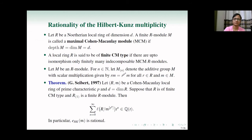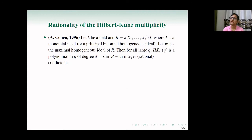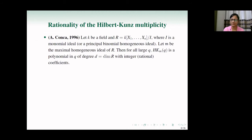Kunka proved in 1996: if R = k[x_1, ..., x_n] / I where I is either a monomial ideal or a principal binomial homogeneous ideal, and m is the maximal homogeneous ideal, then for all large q the Hilbert-Kunz function of R with respect to m is a polynomial in q of degree d equal to the dimension. It has integer coefficients if I is monomial, and rational coefficients if I is a principal binomial homogeneous ideal. This result will be important in the second part of the talk.